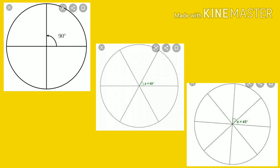From this, we can conclude that when the number of equal parts increases, the size of each part decreases.